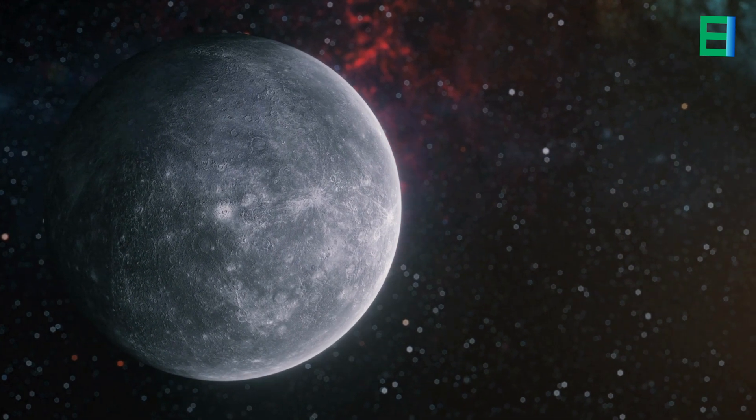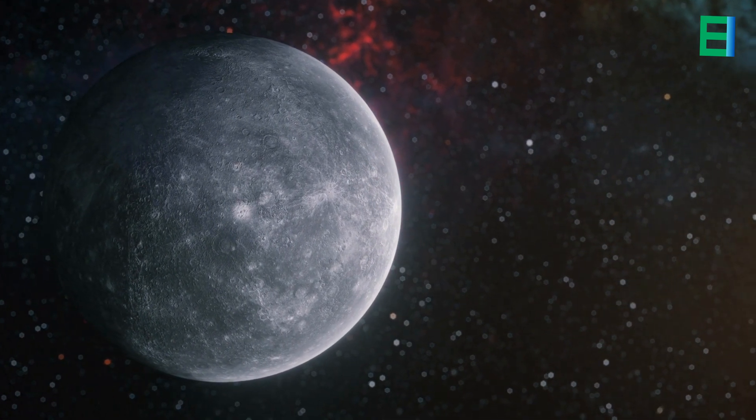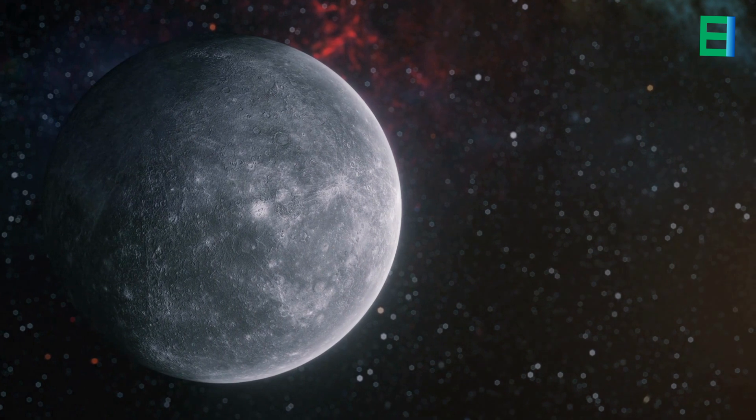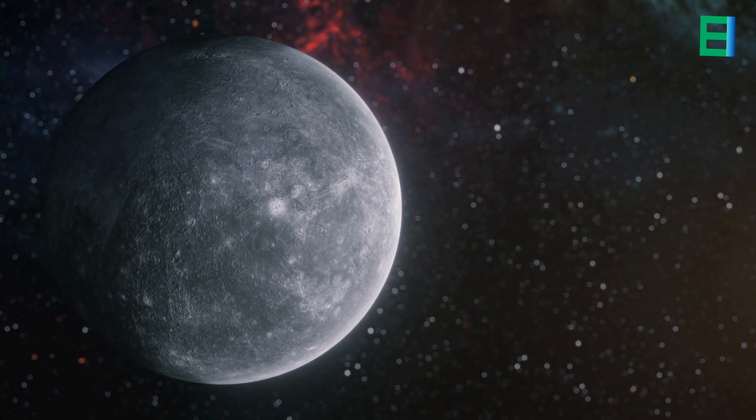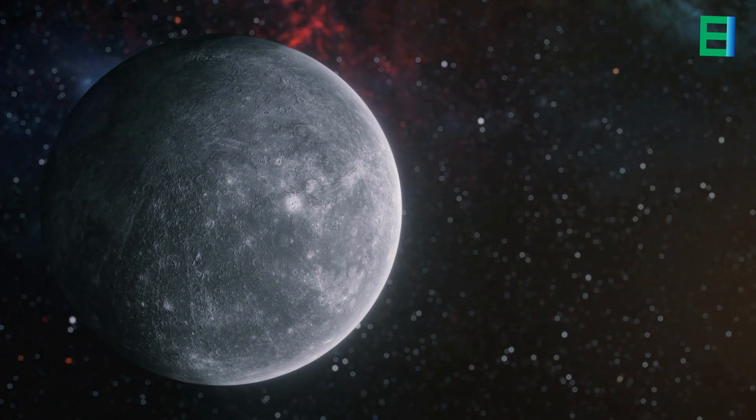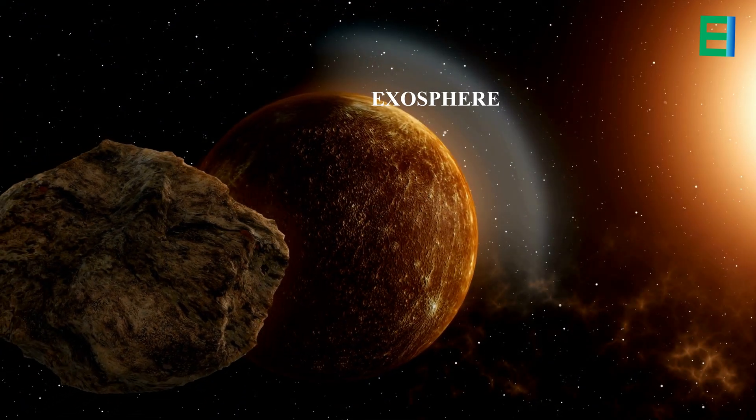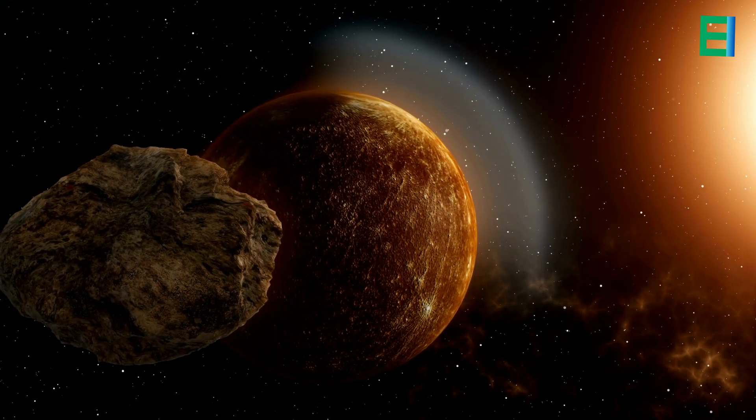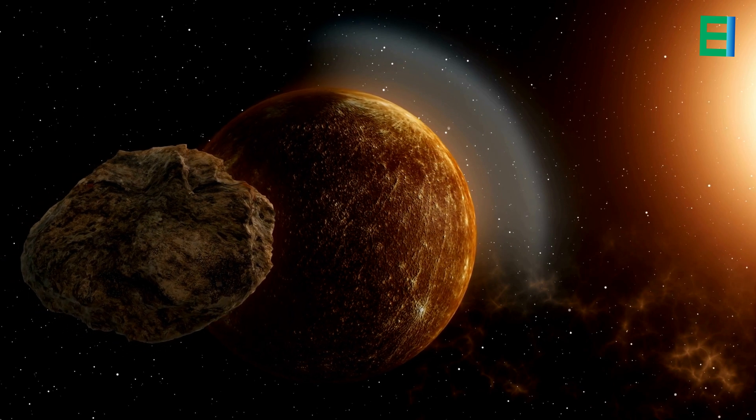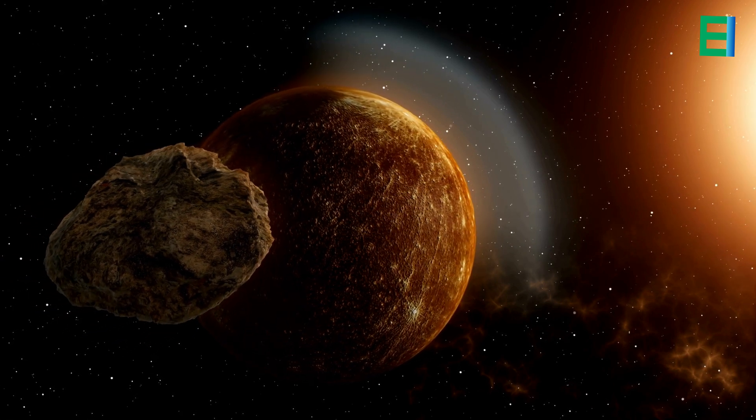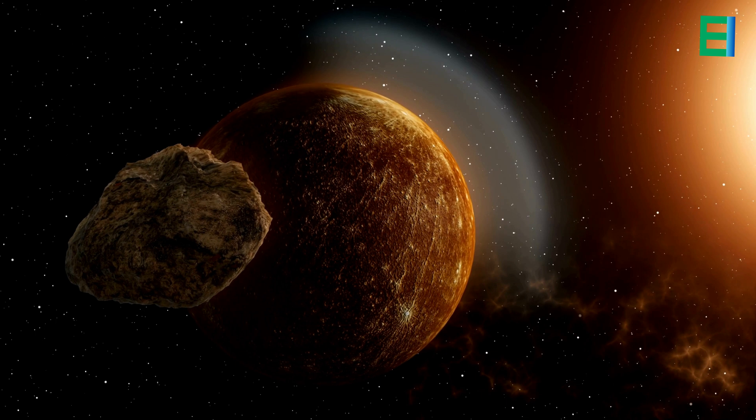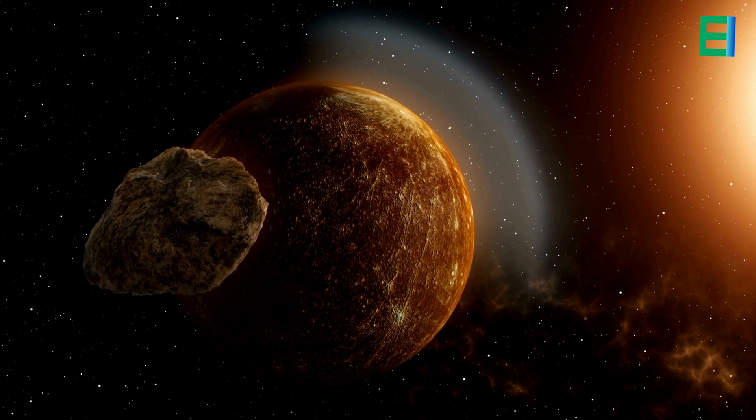Mercury, despite being a small and rocky planet, possesses a tenuous and virtually non-existent atmosphere. Its atmosphere, known as an exosphere, is extremely thin and sparse, consisting mainly of atoms and molecules that have escaped from the planet's surface or have been delivered by solar wind and micrometeoroid impacts.